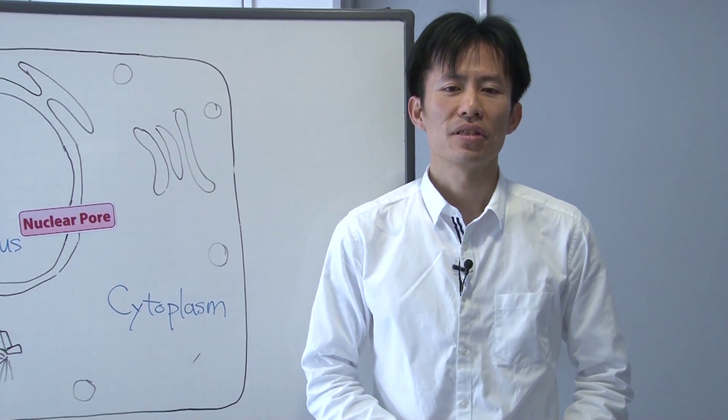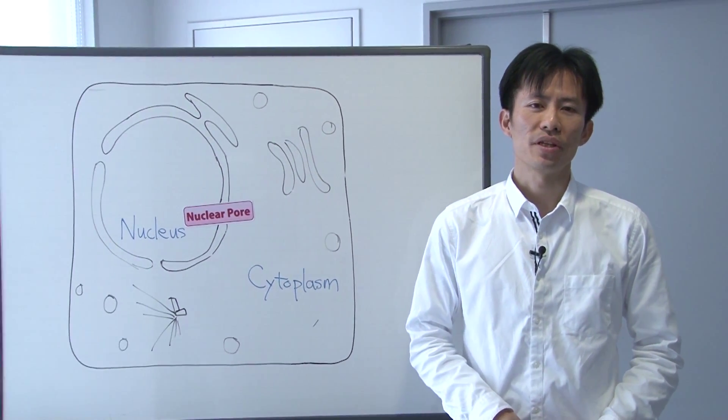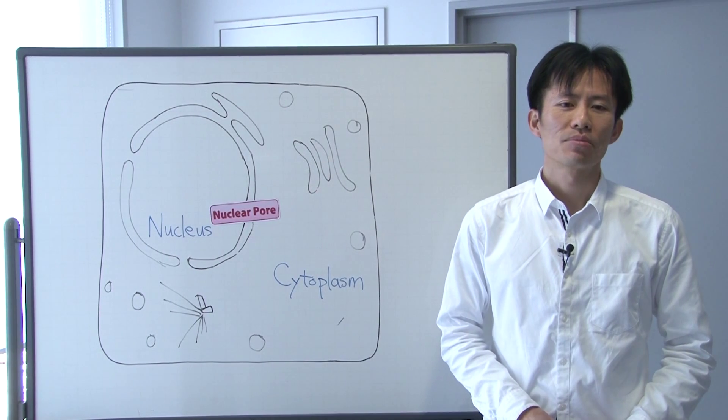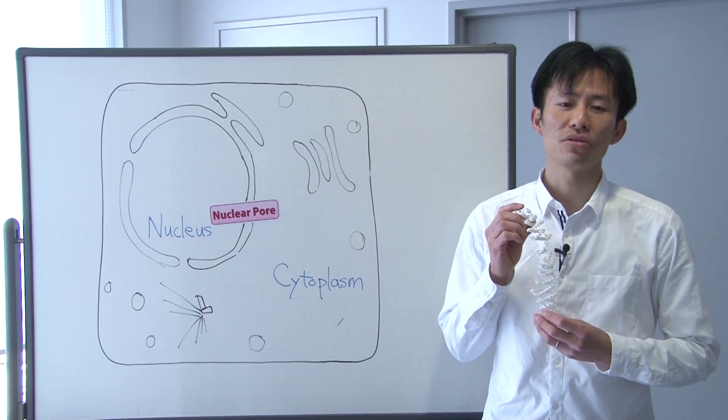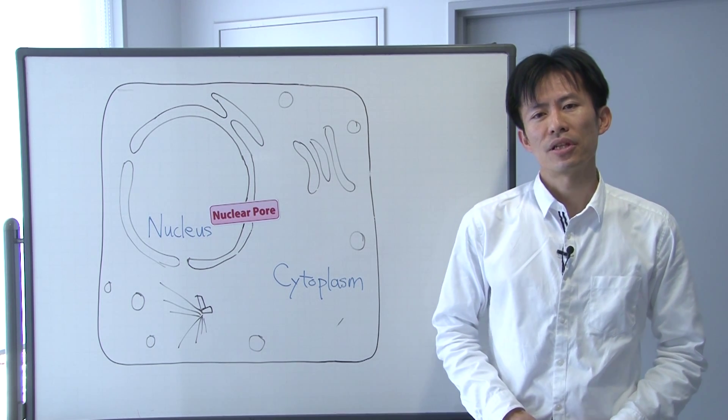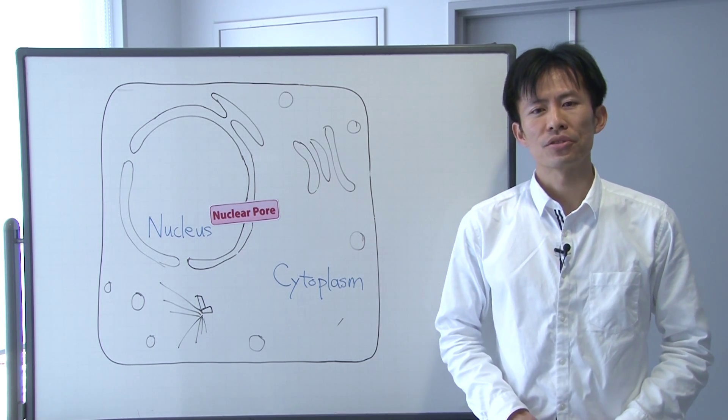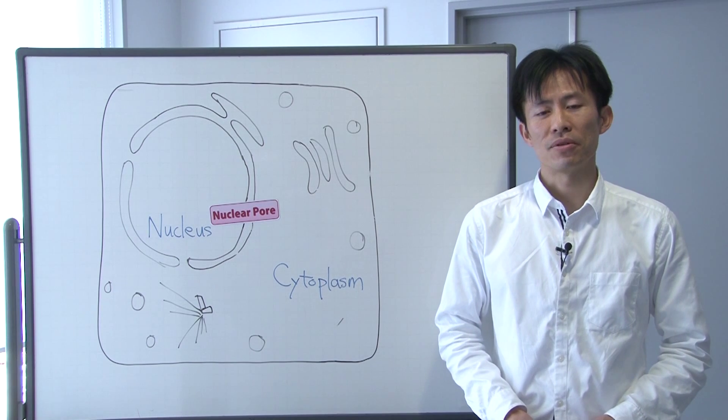You probably have seen a number of crystal structures of proteins. However, proteins are more or less fluctuating in liquid and also in a cell. The crystal structure that you see in the literature is just one of those thousands of conformations.